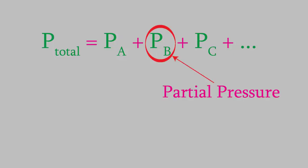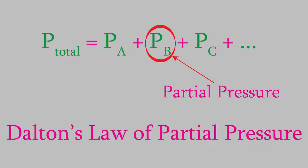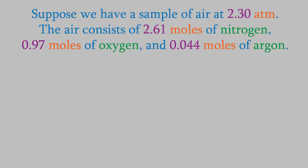The overall pressure is just the sum of the pressures for each gas. So, if we have gases called A, B, C, and so on, the overall pressure is given by this equation. The individual pressure of each gas is called a partial pressure, and this equation is known as Dalton's Law of Partial Pressures. So, for example, suppose we have a sample of air whose pressure is 2.30 atm.